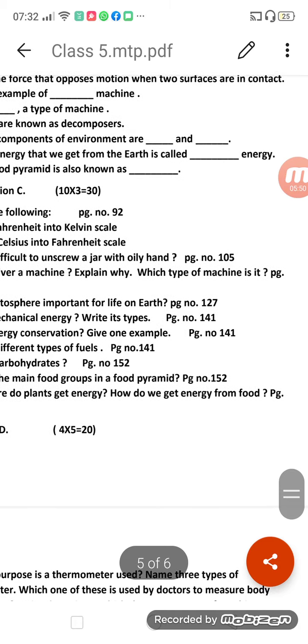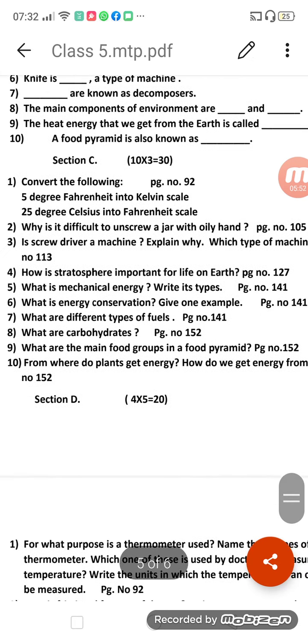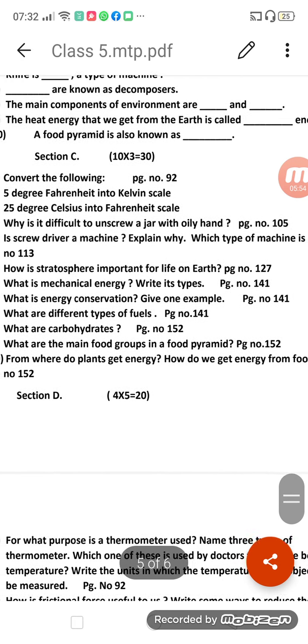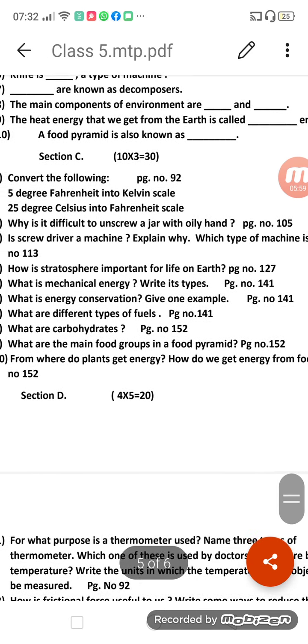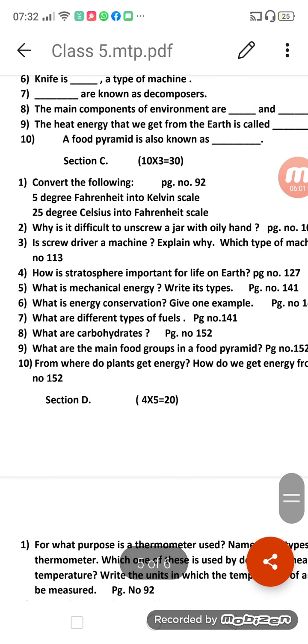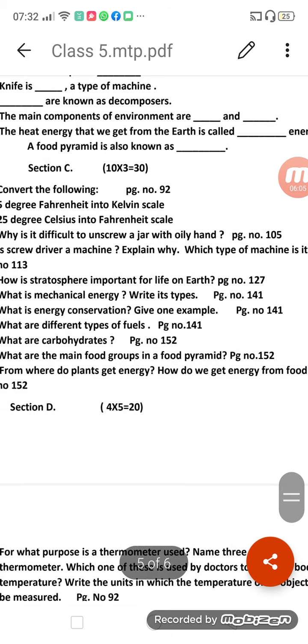Question number nine: What are the main food groups in a food pyramid? Question number ten: From where do plants get energy? How do we get energy from food? Plants - from where plants get energy, and from where we get energy?